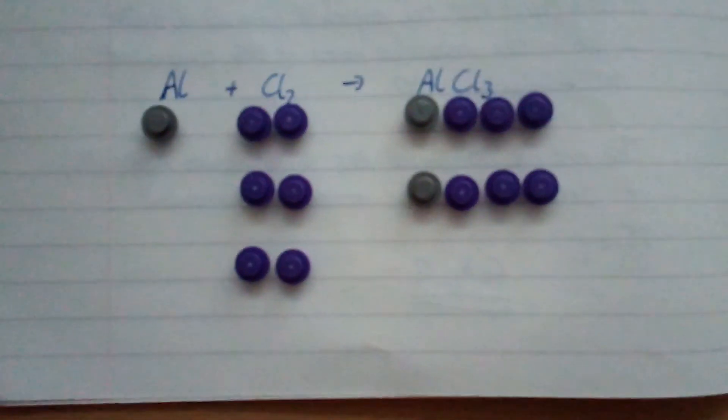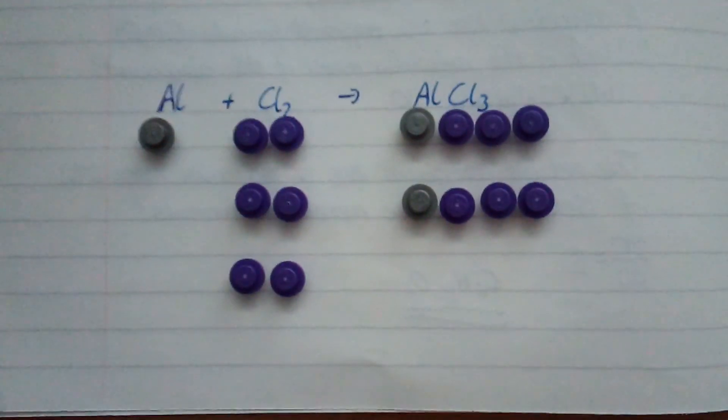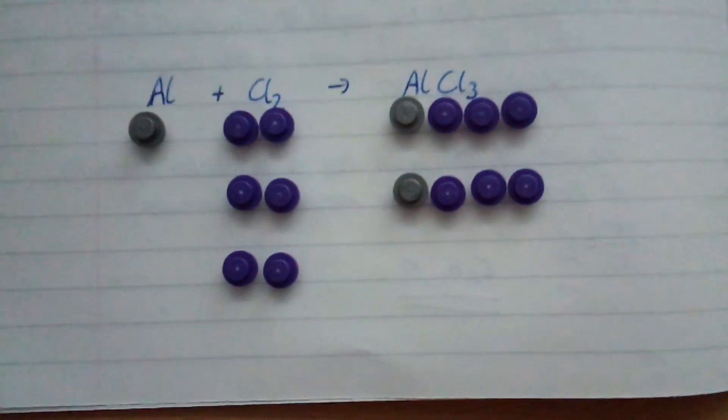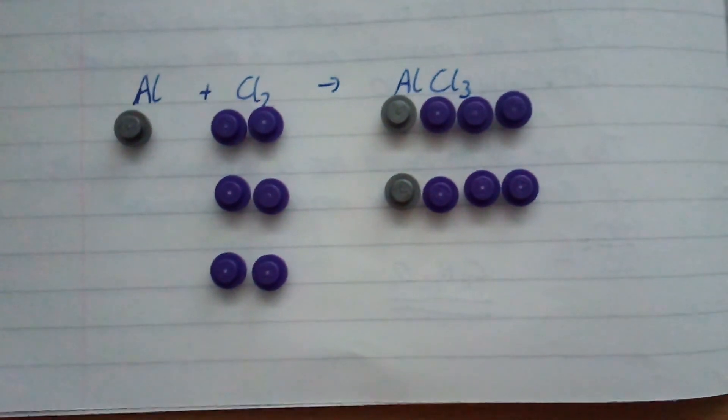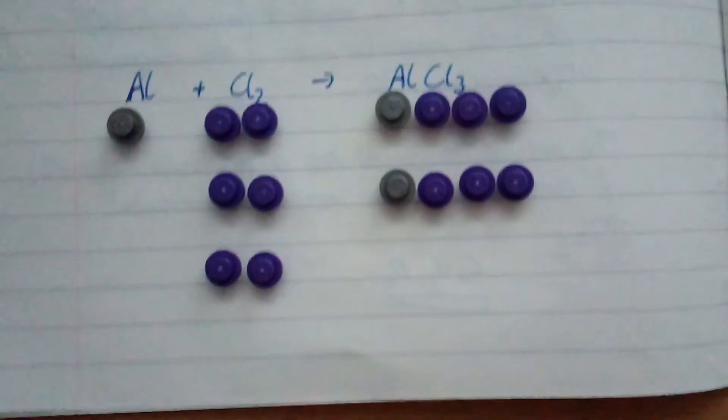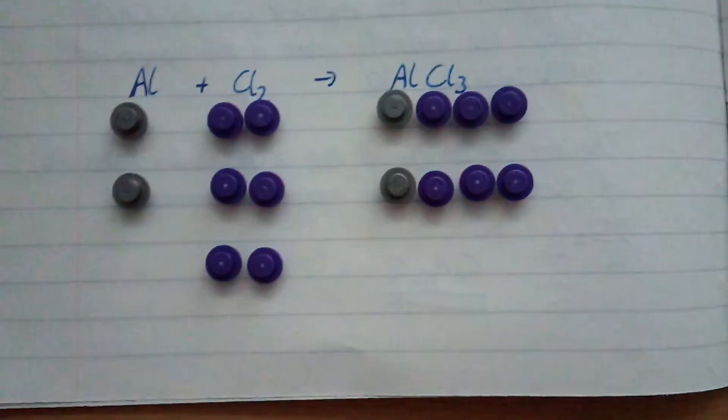So my chlorines are nice and balanced. That's all I wanted. Oh, hang on a minute. By balancing my chlorines, I've messed up my aluminium. Ah! Okay. So what we're going to have to do now is make the aluminiums balance. Happily, aluminium's all on its own here. So I can just pop one more atom on. Sorted.